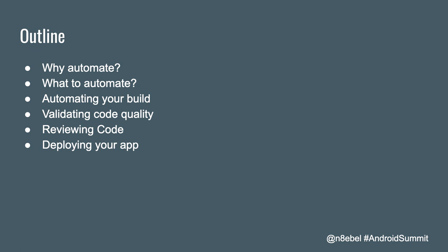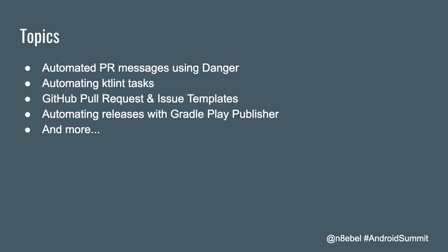We're going to be talking about what things you might want to automate and why you might want to automate in the first place. Then we'll look at key areas of the development workflow, including automating your build, validating code quality, reviewing code, and deploying your app. We'll look at automated PR messages using Danger, how to automate KT Lint tasks, tricks within GitHub including pull request templates and issue templates, and how to automate releases with tools like Beta by Crashlytics or the Gradle Play Publisher plugin.